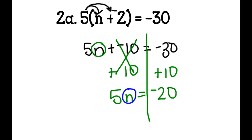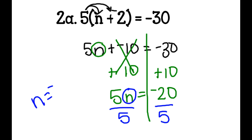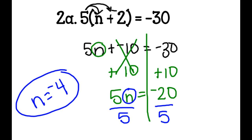I circle my variable and divide both sides by 5. n equals negative 4. Circle it, and that's my answer.